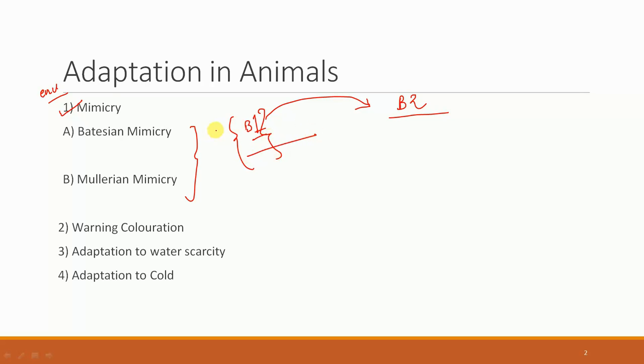This is why this is known as Batesian mimicry. This is something that is important. The example of the monarch butterfly which mimics the viceroy butterfly is a classic example of B2. This is one thing you should keep in mind.